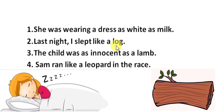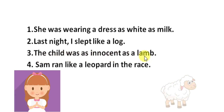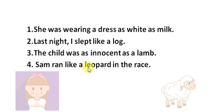Here, the person was sleeping soundly and not showing any movement. Thus, it is compared to a piece of log, an inanimate thing. Number 3: 'The child was as innocent as a lamb.' A lamb is a meek and mild animal considered to be really innocent. The child is compared to a lamb because the child was also very innocent.